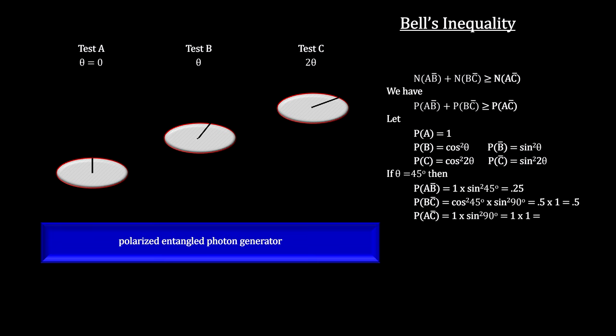For an angle of 45 degrees, we get 0.75 is greater than or equal to one. Clearly not true. This is called a Bell violation. It tells us that the assumption that states are determined by hidden variables must be false.